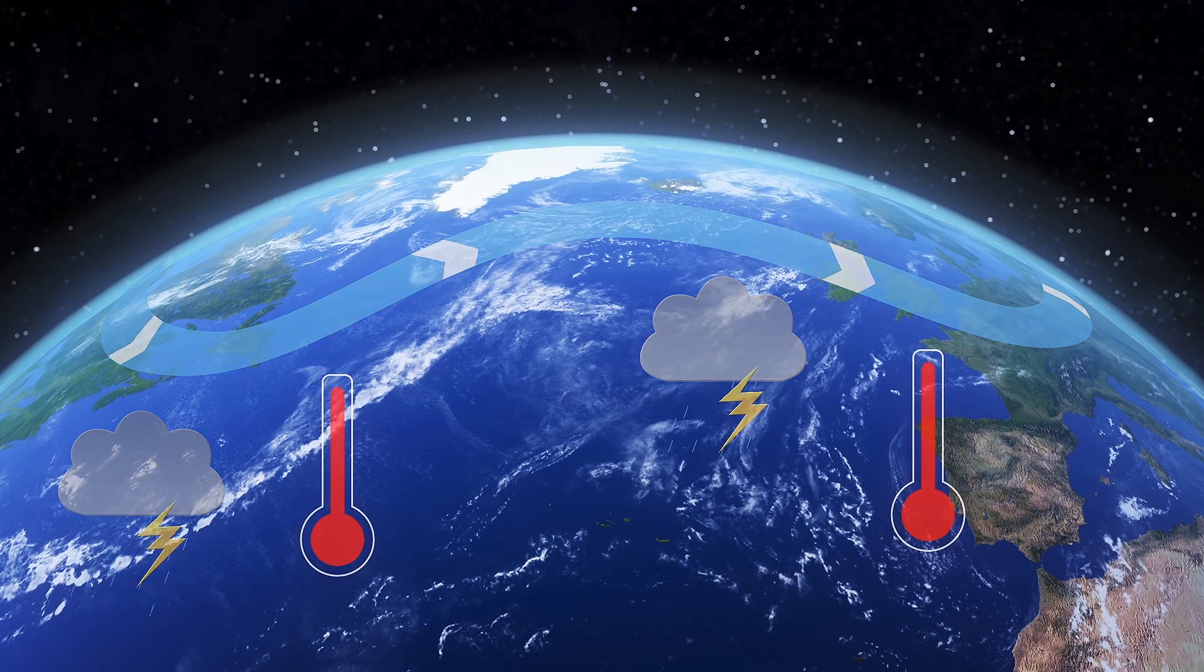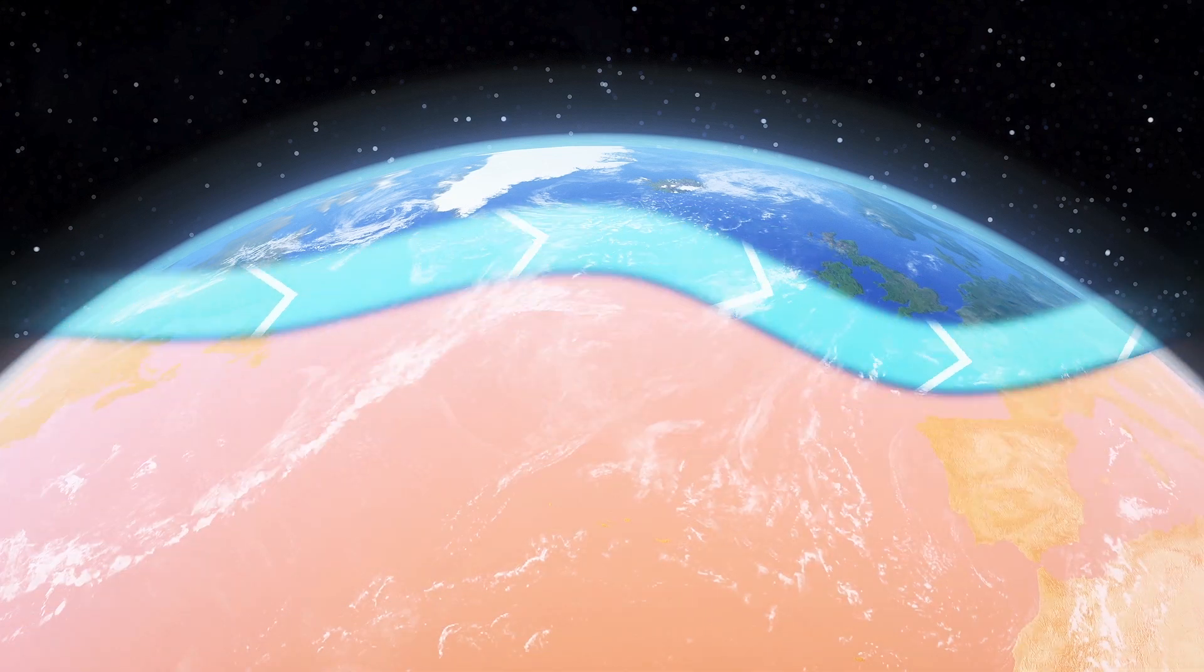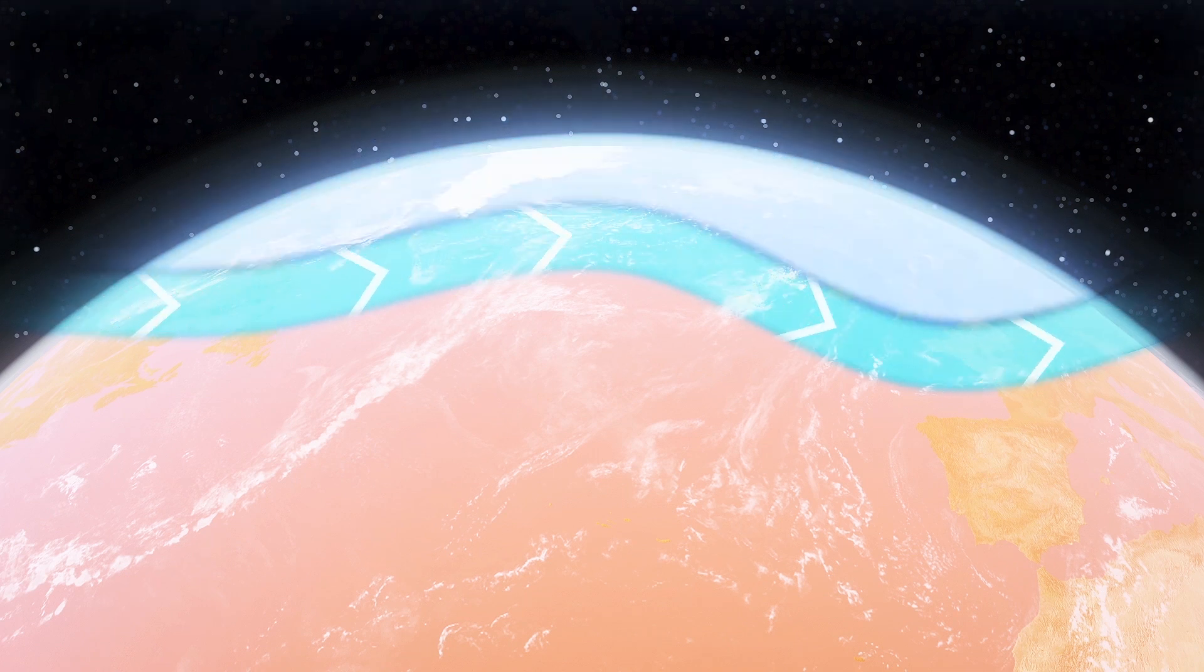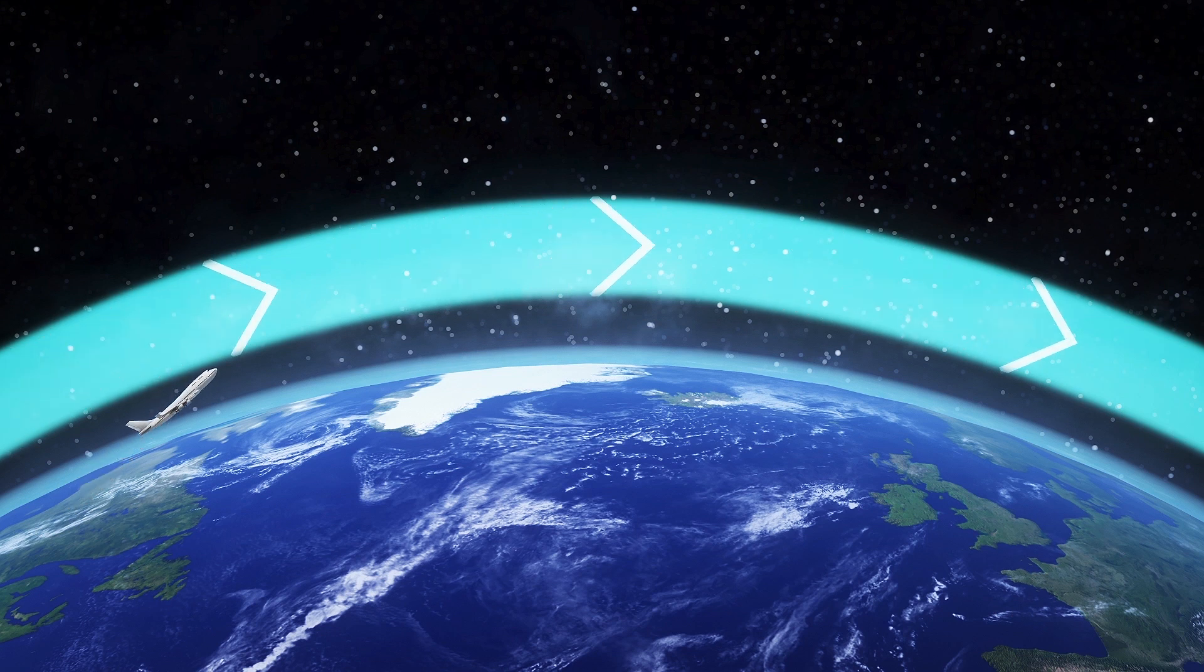This would impact North America and Europe in the form of more severe flooding, droughts, and heat waves. The jet stream is a band of fast-moving air that is created by the difference in pressure between cold Arctic air and warmer air to the south. It is also known for giving airliner jets a time-saving boost when they travel from the U.S. to Europe.